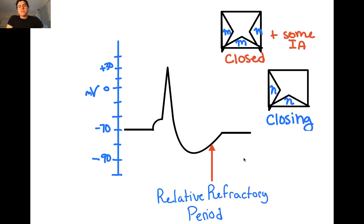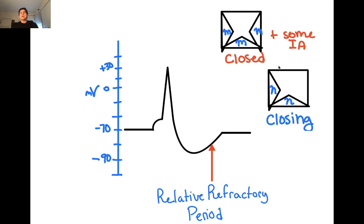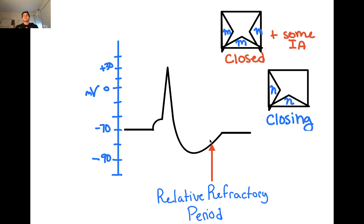This point is called the relative refractory period. It's the time period of the action potential where you can start an action potential, but it requires a much stronger stimulus than if the cell were at rest. This is because during the relative refractory period, even though some voltage-gated sodium channels are closed, a good portion remain inactivated. So you need a stronger stimulus to open enough voltage-gated sodium channels to reach threshold.